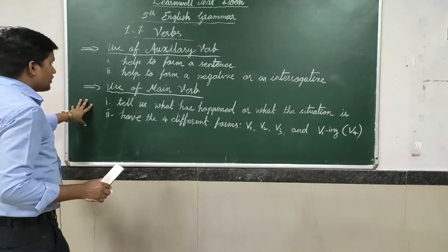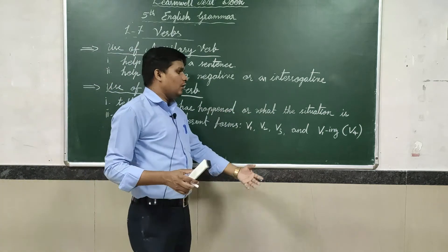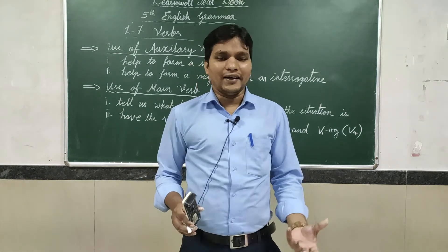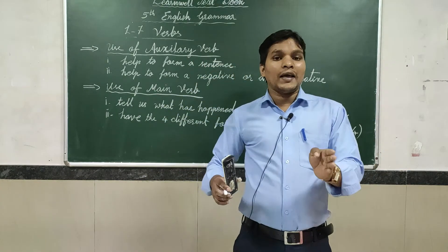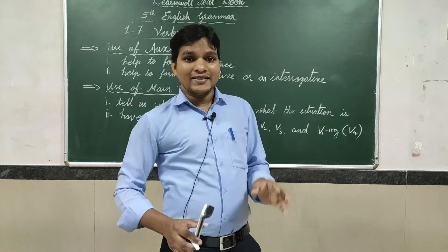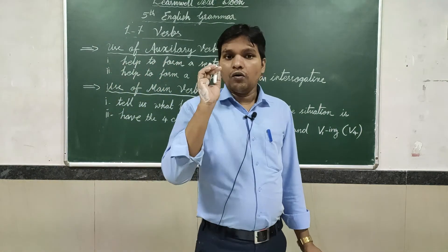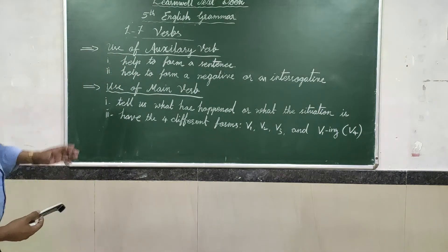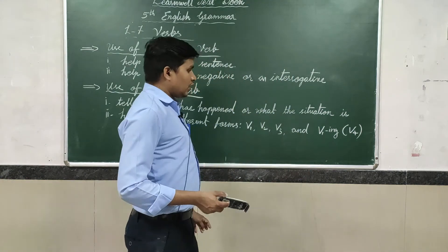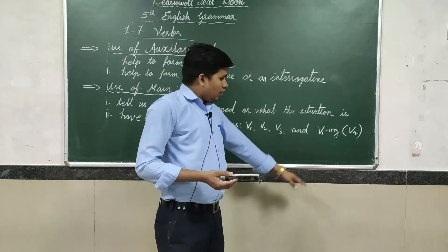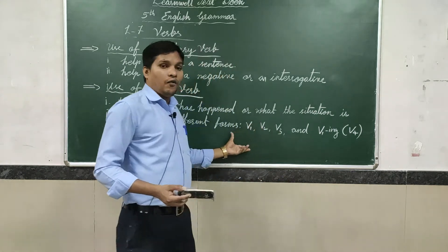Now the use of main verb: the main verb tells us what has happened or what the situation is. When you are reading a sentence, the main verb explains to us what has happened or what type of situation it is. Also, the main verb has four different verb forms: V1, V2, V3, and V1 ING form, which is V4. Due to the verb forms, we can know which tense it is, what happened, and when it happened.